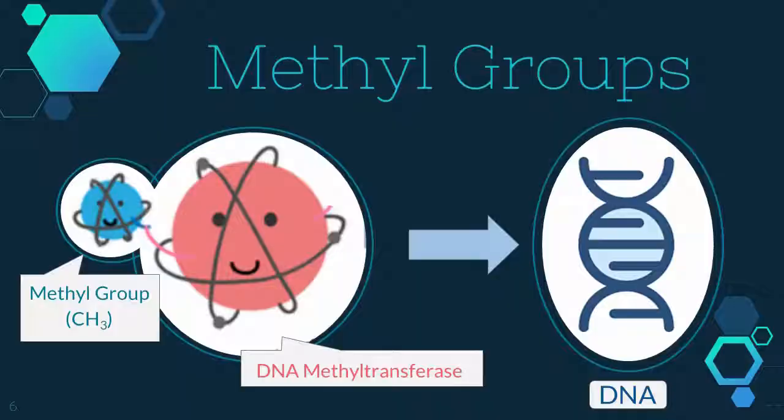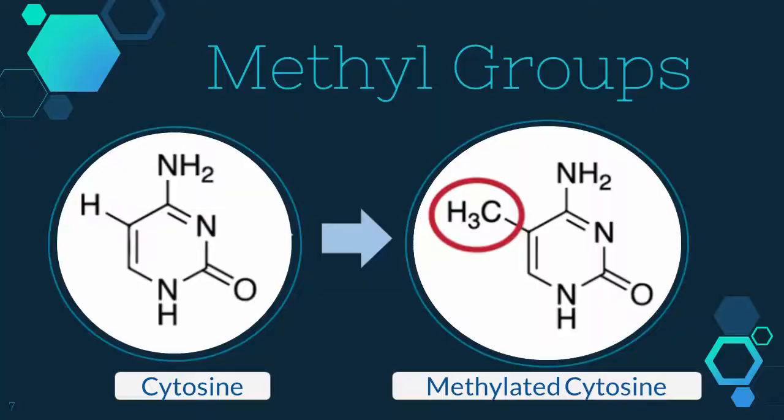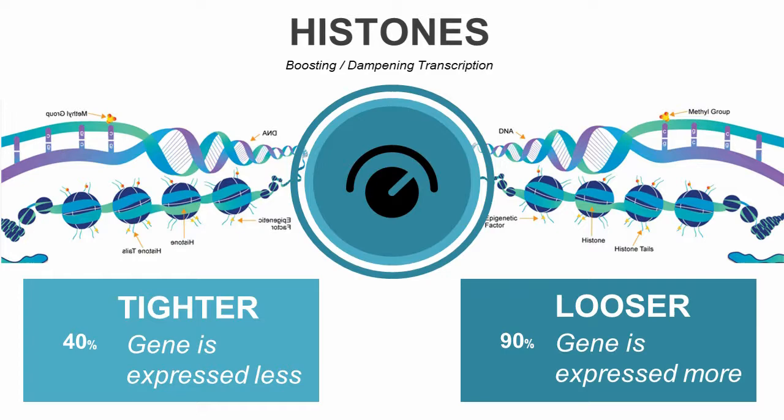Methylation works with enzymes called DNA methyltransferases. They have specific amino acid structures that chemically interact with the DNA's promoter sequences — where the gene starts — by transporting a CH3 group onto the pyrimidine rings of adenine or cytosine. This creates what's informally known as the fifth base. By changing the base's chemical composition, transcriptional factors cannot bind to the DNA, inhibiting transcription. Therefore, RNA — the readable instructions — isn't made, and the gene is switched off.